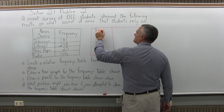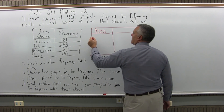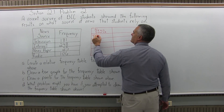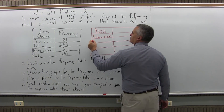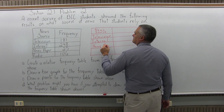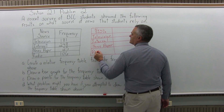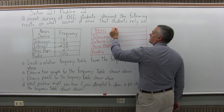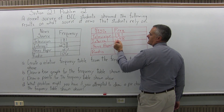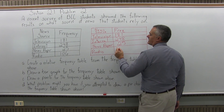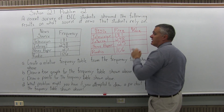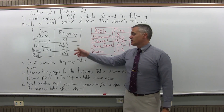The first column will stay the same: News Source. And the same news sources: television, internet, newspaper, and radio. The first column stays exactly the same, unchanged. The next column for a relative frequency table is still frequency. The frequency for TV is 181, for internet is 248, for newspaper is 25, and for radio is 106. Now here's where it becomes different — for a relative frequency table, the last column is relative frequency.